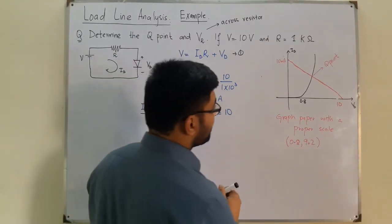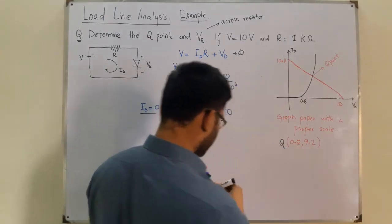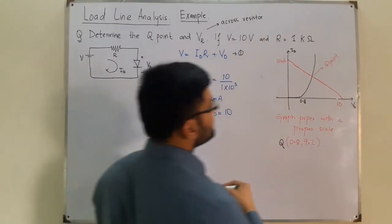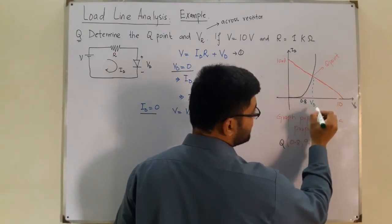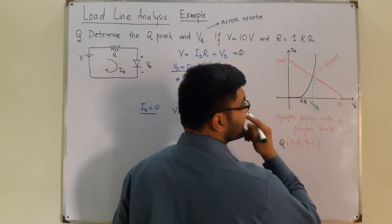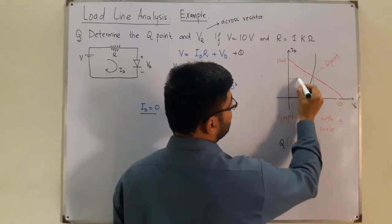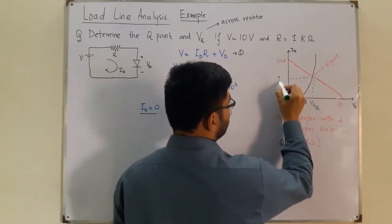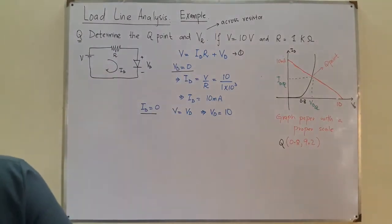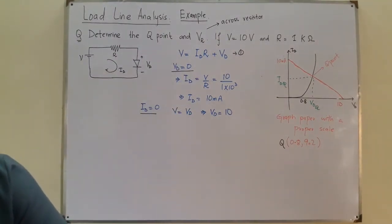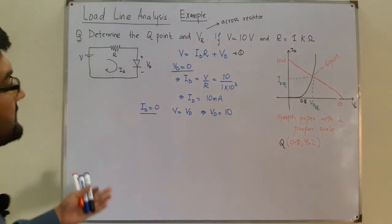How do we represent the coordinates? Whatever value at this point for VD, we place a Q in the subscript as well. Similarly for the current we have ID, and Q represents the Q point. This is the first part of the question - determine the Q point.